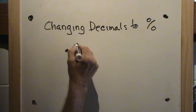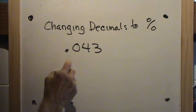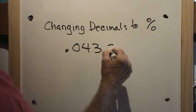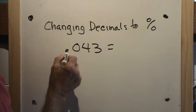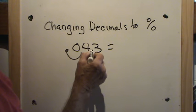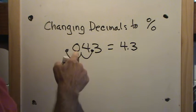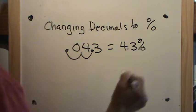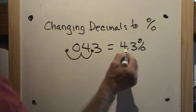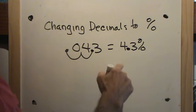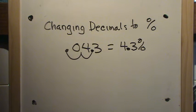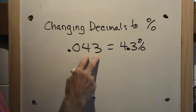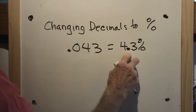Let's take a look at this decimal. This decimal is forty-three thousandths, because the places are tens, hundreds, and thousands. To change this to a percent, we move the decimal two places to the right — one, two — so it would be here. We have four point three; we don't bring the zero over because the zero would make no difference. We add the percent sign and notice we have to keep the decimal point because there's a number that comes after it. So forty-three thousandths becomes four and three-tenths percent.